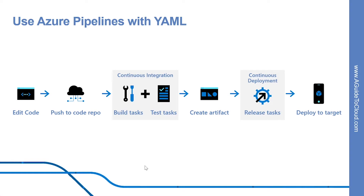So what are the benefits of using YAML? If you use YAML, the pipeline is versioned with your code and follows the same branching structure. You get validation of your changes through code reviews in pull requests and branch build policies. Another benefit is that for every branch, you can modify the build policy by modifying the Azure Pipelines YAML file.